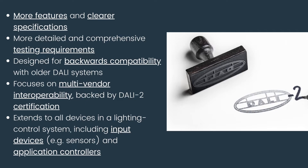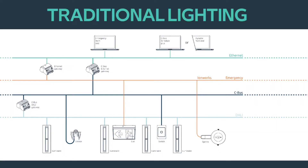How is a DALI 2 system wired? A traditional DALI lighting control system typically comprises multiple wiring layers: a DALI line for connecting the light fittings to a proprietary DALI gateway, a lighting control network cable — typically CAT5 — used to connect any sensors and switches to the gateway, and any emergency fittings are usually wired onto their own monitor system. Finally, if required to connect to the outside world, the system is connected via an ethernet gateway to the building's TCP/IP network.